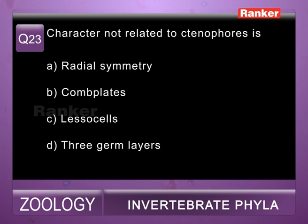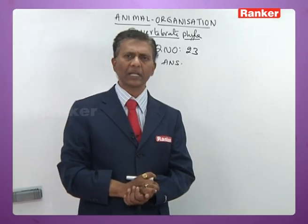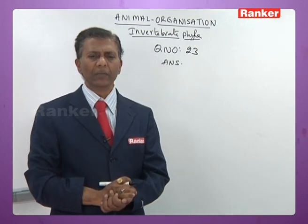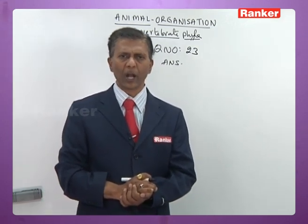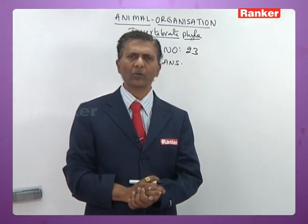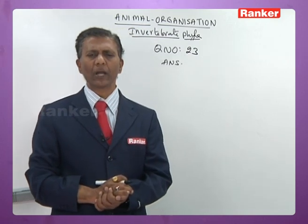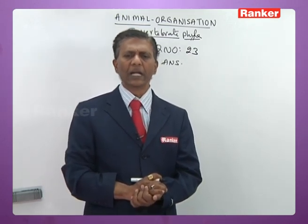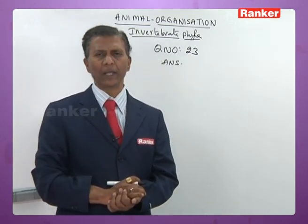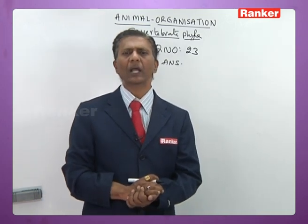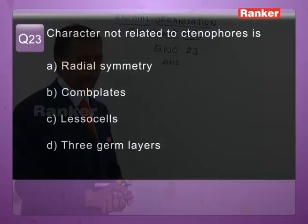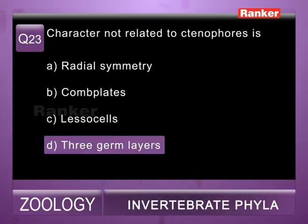Twenty-third question: character not related to ctenophores — a) radial symmetry (correct, they are radially or biradially symmetrical), b) comb plates present (correct, eight comb plates), c) lasso cells present (correct), d) three germ layers (wrong — ctenophores are diploblastic, not triploblastic). So twenty-third question correct answer is d.